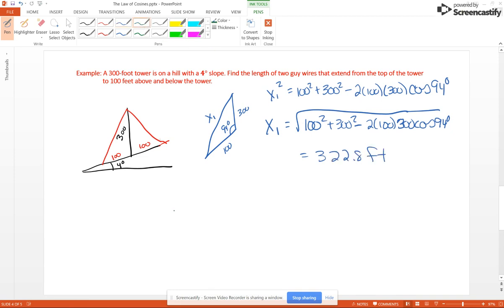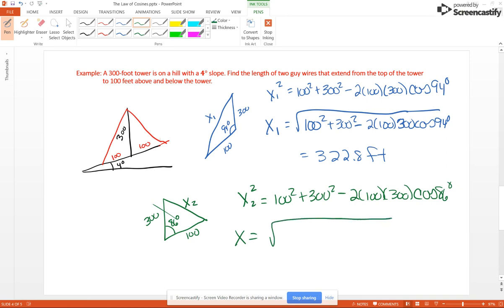Now the other triangle is going uphill. So this is 300 and this is 100, but this time our angle is 86° and we'll call this X₂. You're going to have a very similar thing going on. So you're going to have 100² + 300² - 2 × 100 × 300 cos 86° – that's the only thing that changes in this problem. Take the square root of that and you're going to get 309.5 feet – the end.